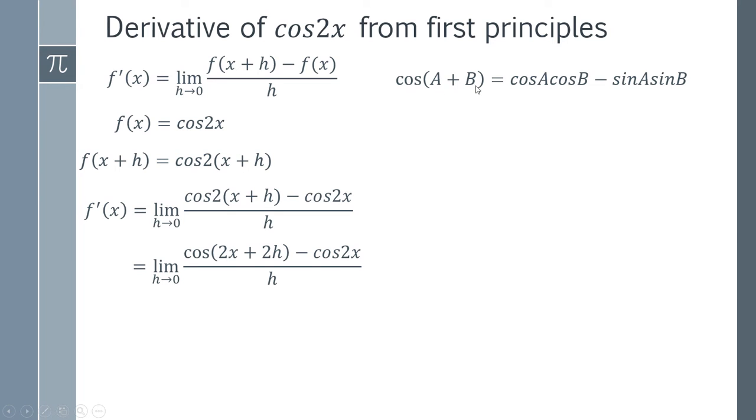Your cos of a plus b is cosines of a and b minus sines of a and b. So this 2x is our a and this 2h is our b. So we do the cosines of 2x and 2h minus the sines of 2x and 2h. And then that minus cos2x simply goes on the end there.